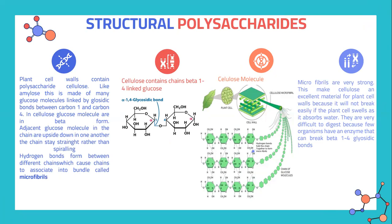Structure of polysaccharides. Plant cell walls contain the polysaccharide cellulose, made of many glucose molecules linked by glycosidic bonds between carbon 1 and carbon 4. In cellulose, glucose molecules are in beta form. Adjacent glucose molecules in the chains are flipped upside down relative to one another, so the chains stay straight rather than spiralling. Hydrogen bonds form between different chains, causing them to associate into bundles called microfibrils. This is an example of the alpha 1-4 glycosidic bond arrangement, and this is a sample of a cellulose molecule showing hydrogen bonding between chains.